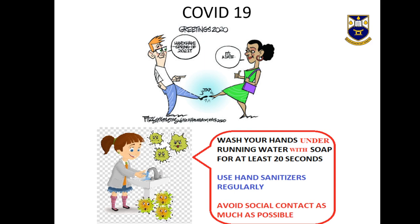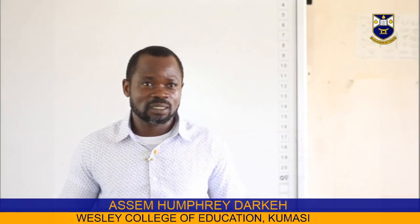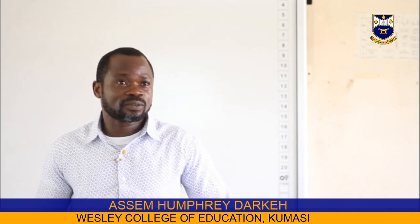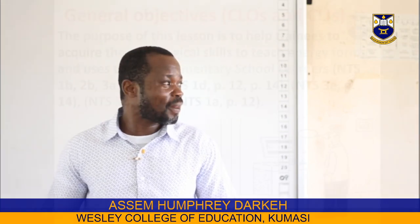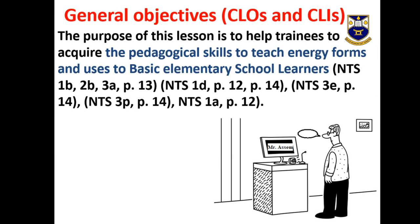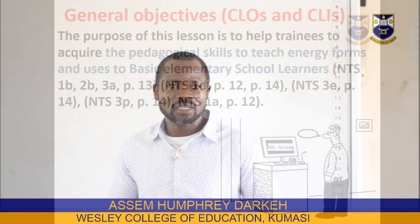The general objectives of this lesson, which we would want to look at under the CLOs and then the CLIs, tell us that this lesson will help you to acquire the pedagogical skills to teach energy forms and uses to basic elementary school learners. This can be found in your NTS 1B, 2B, 3A page 12; NTS 1D page 12 and page 14; NTS 3E page 14.